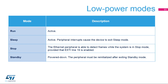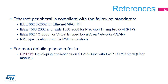Here is an overview of the peripheral status in each of the low power modes. Only PMT mode is available in stop mode; in this mode, the peripheral waits for wake-up packets. The Ethernet peripheral is compliant with the following standards: IEEE 802.3-2002 for Ethernet MAC, IEEE 1588-2008 for precision networked clock synchronization, and the RMII specification from the RMII consortium.